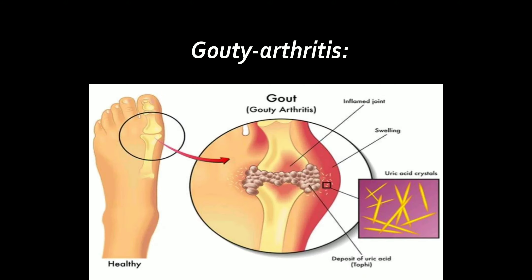Gouty arthritis: In this disorder, joint pain occurs due to deposition of uric acid in the joints. If uric acid is produced in excess or not excreted, it accumulates in joints as sodium urate and degenerates cartilage, causing inflammation and pain. It generally affects the joints of the feet.